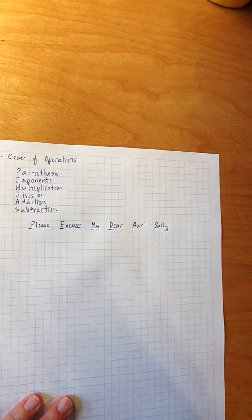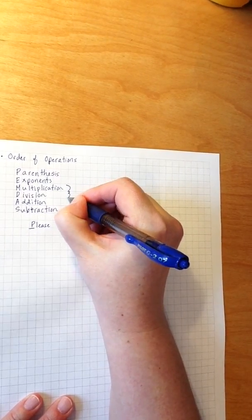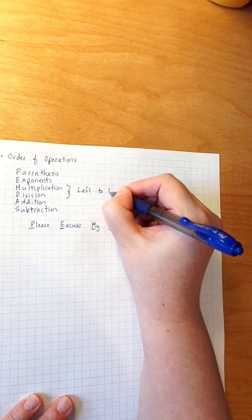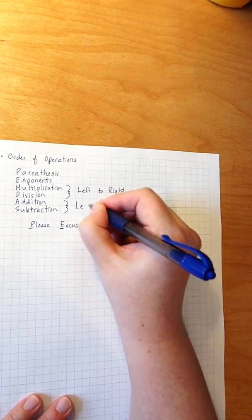With one major note here, multiplication division is done as a unit from left to right, as is addition-subtraction.